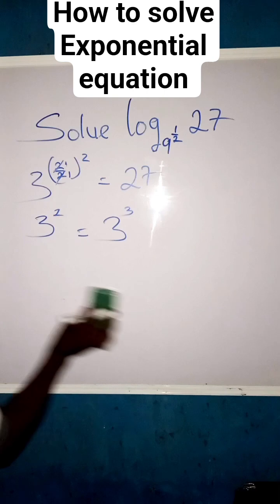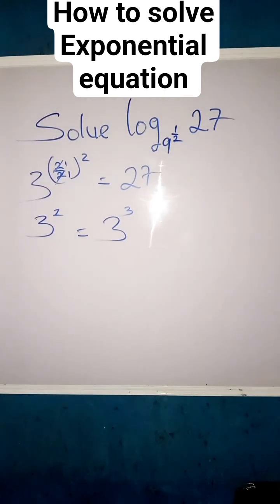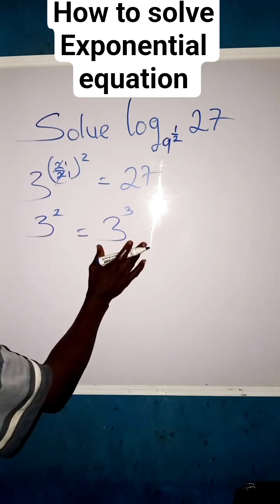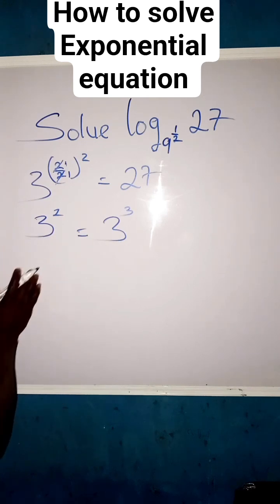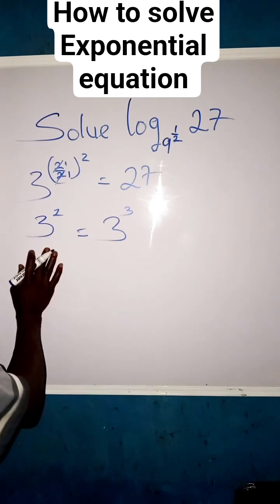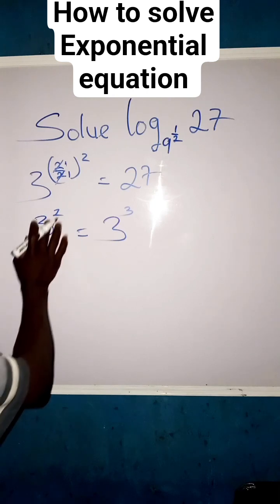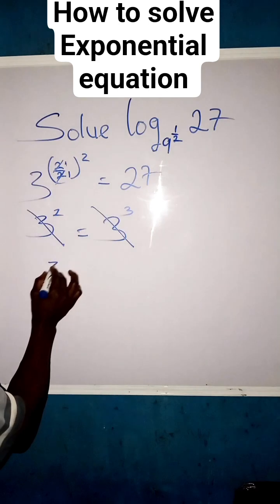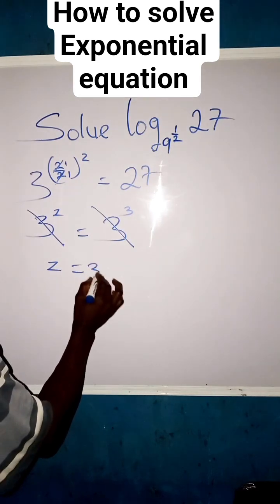See that we are having the same base but different powers. You can equate the power with the other, so we don't need the base anymore. We now have z equals to 3.